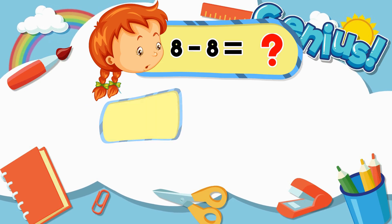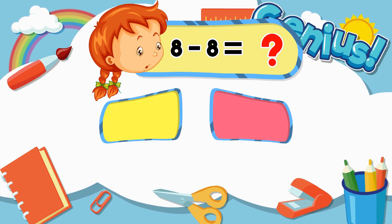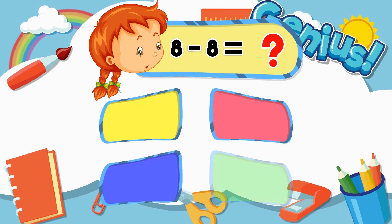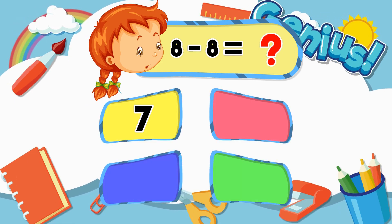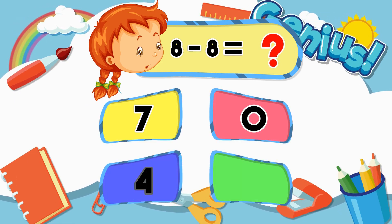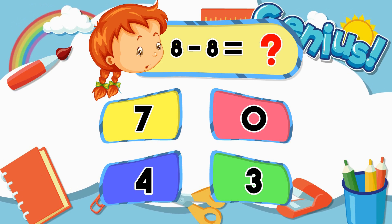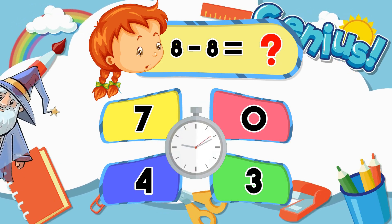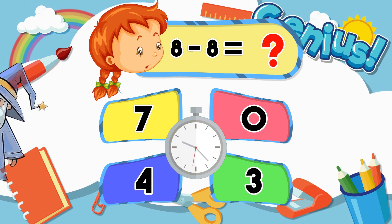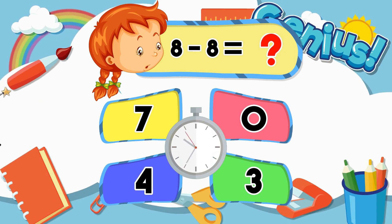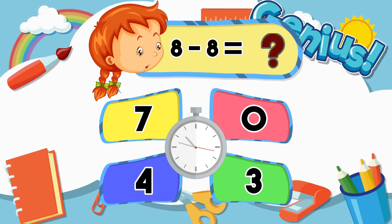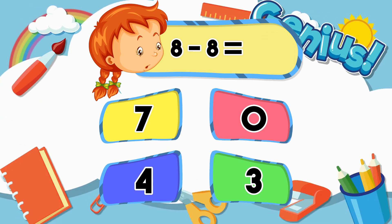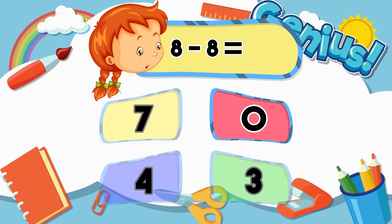What is 8 minus 8? 7, 0, 4, 3. The correct answer is 0.